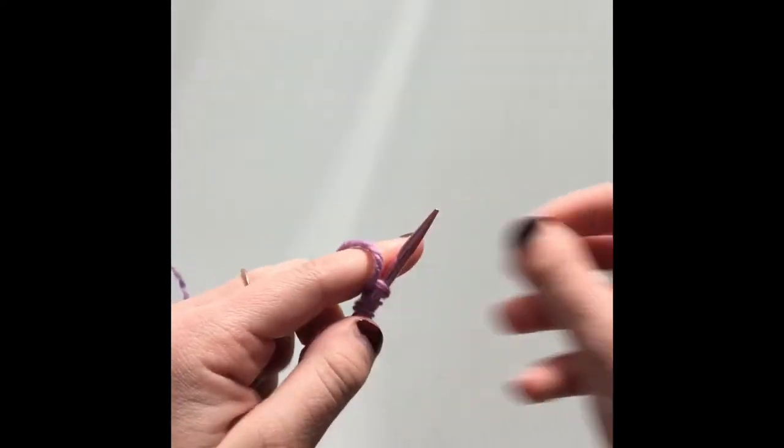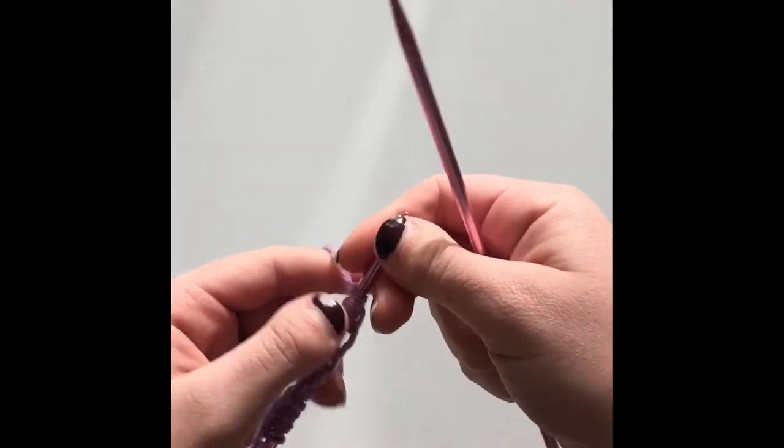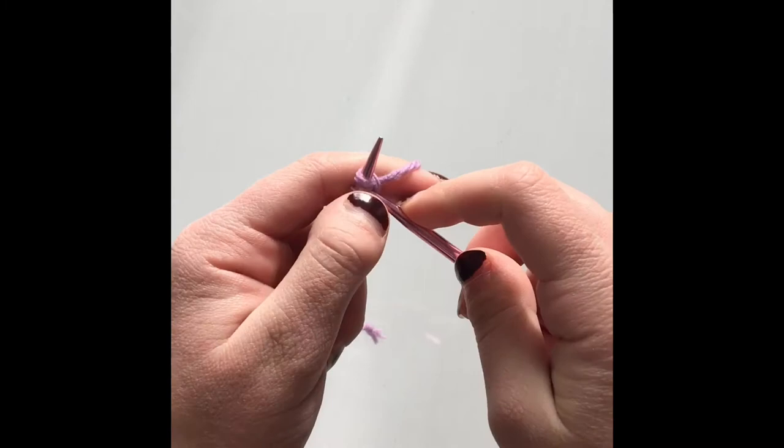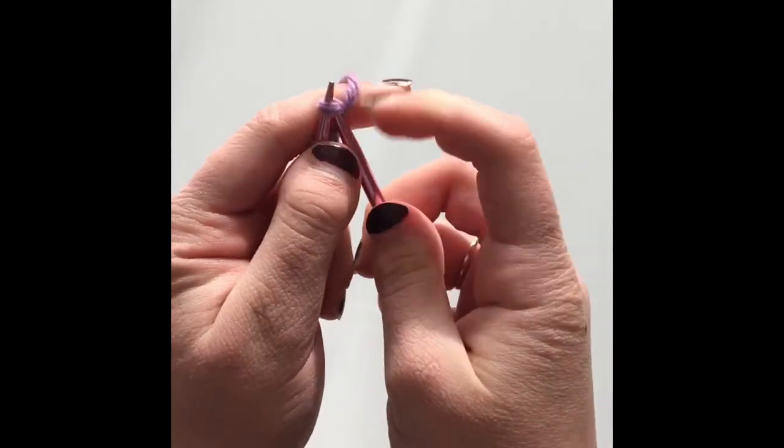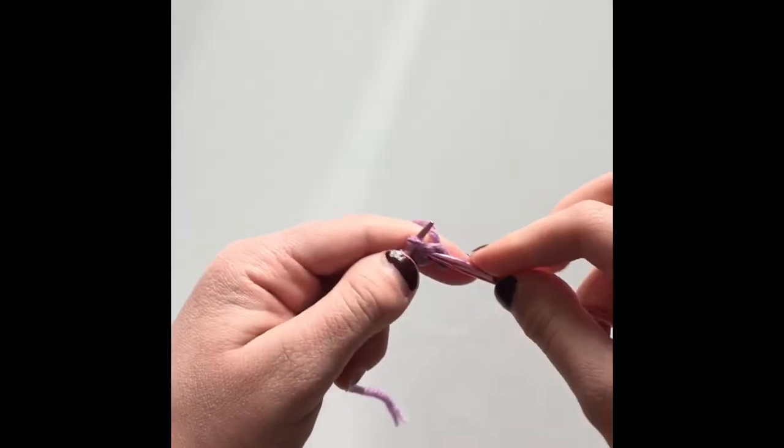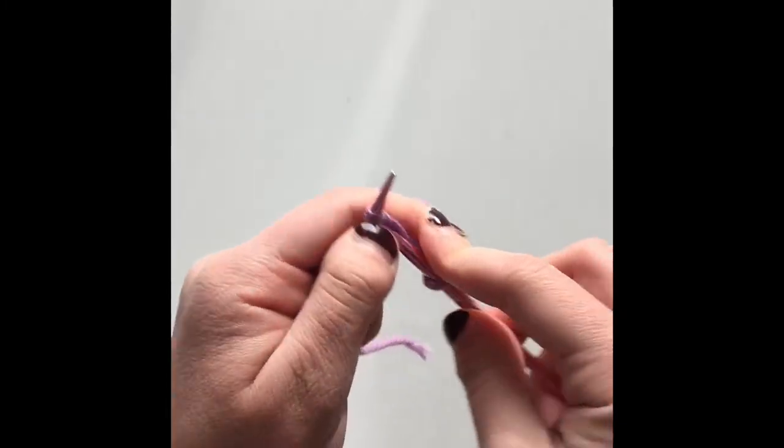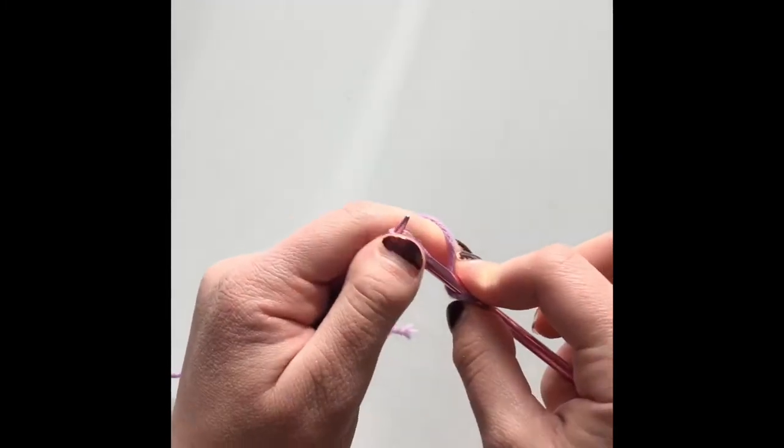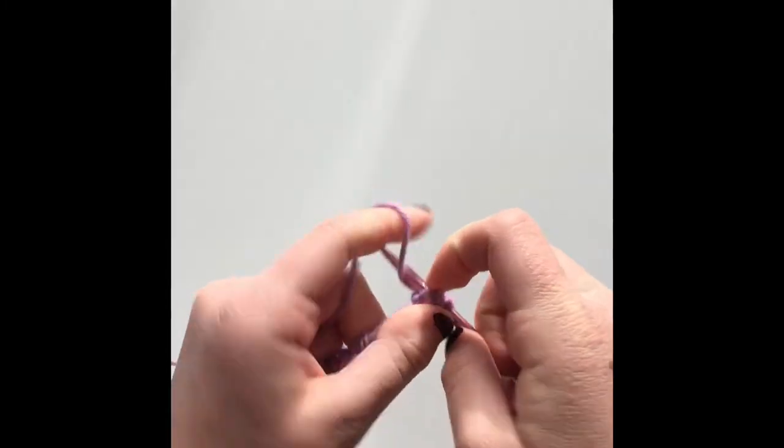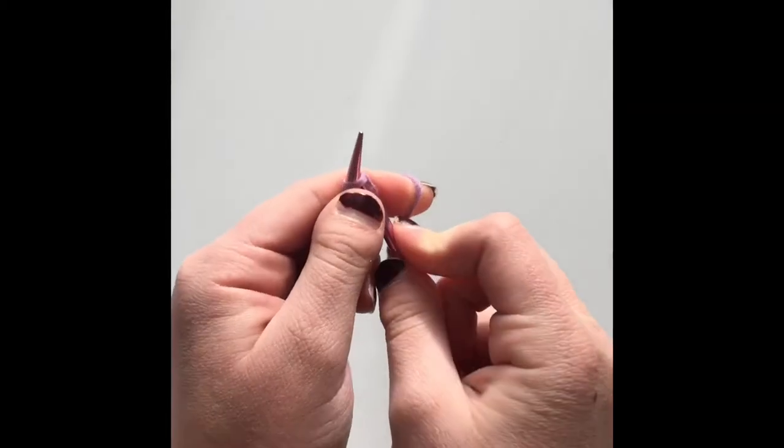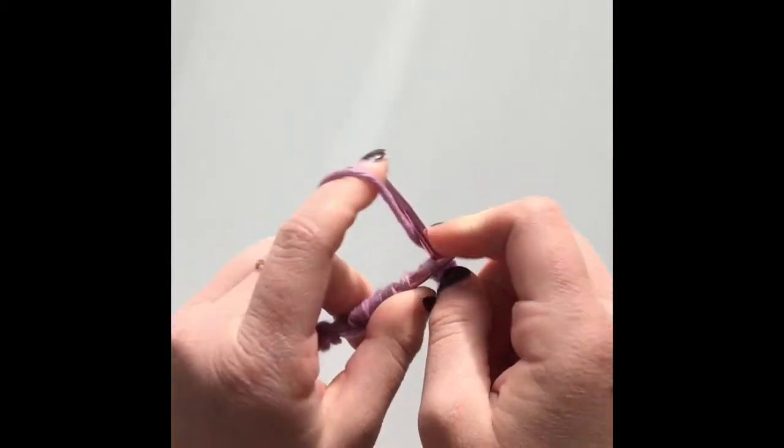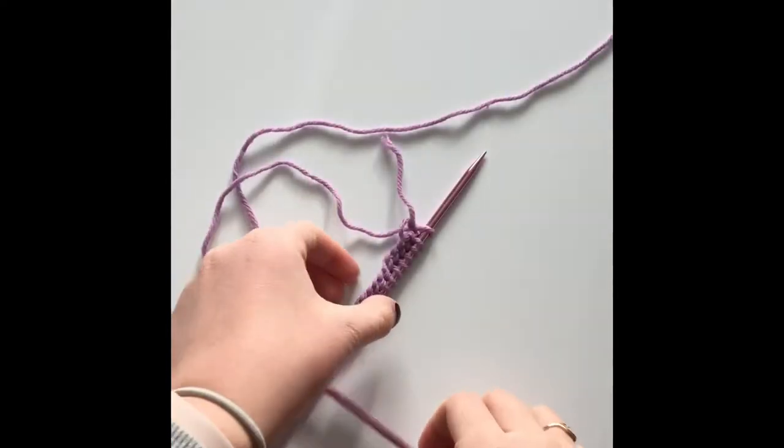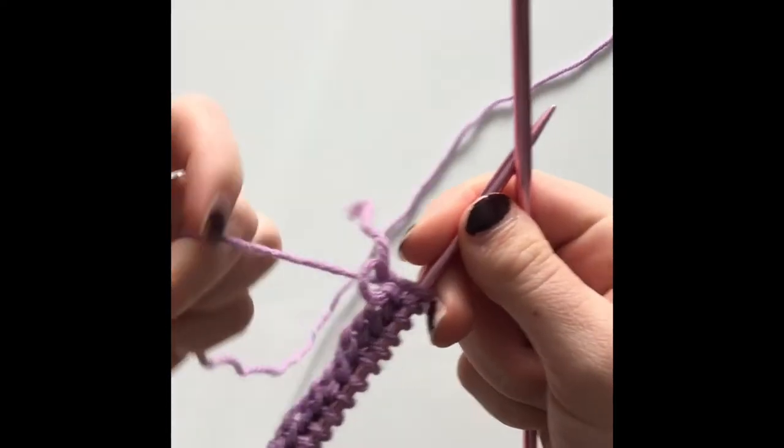So let's start off with row one. For row one, it's simple. All we do is knit every stitch in this row. So just a regular knit in every single stitch. We're just going to knit every stitch until you get to the end of the row. When you get there, meet me back for row two. Okay, so I've completed row one, knitting every stitch in this row.